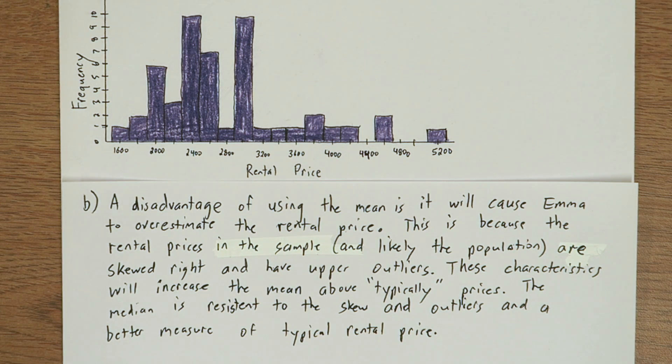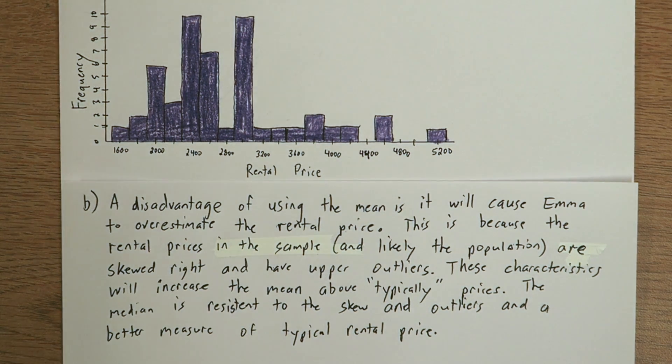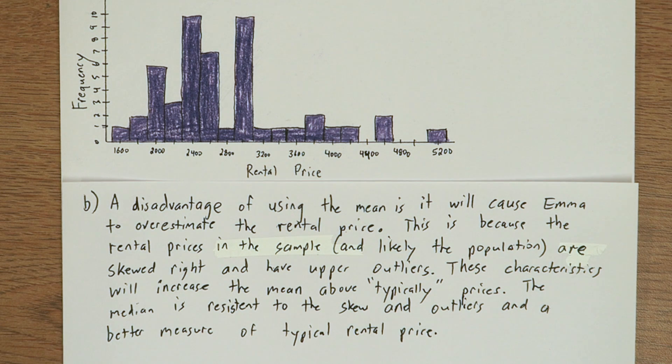I think a lot of students will recognize that the mean is going to get affected by the skew and the upper outliers, but they won't explicitly say why this is a disadvantage in this context. I think the first sentence here is really important. You have to state how it will actually affect Emma. You have to say that this will cause her to overestimate the typical rental price.